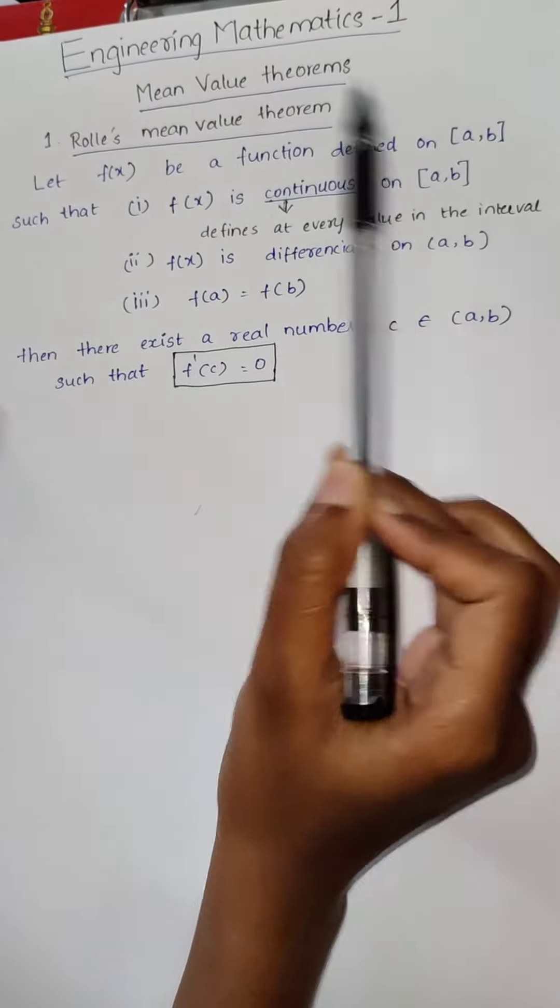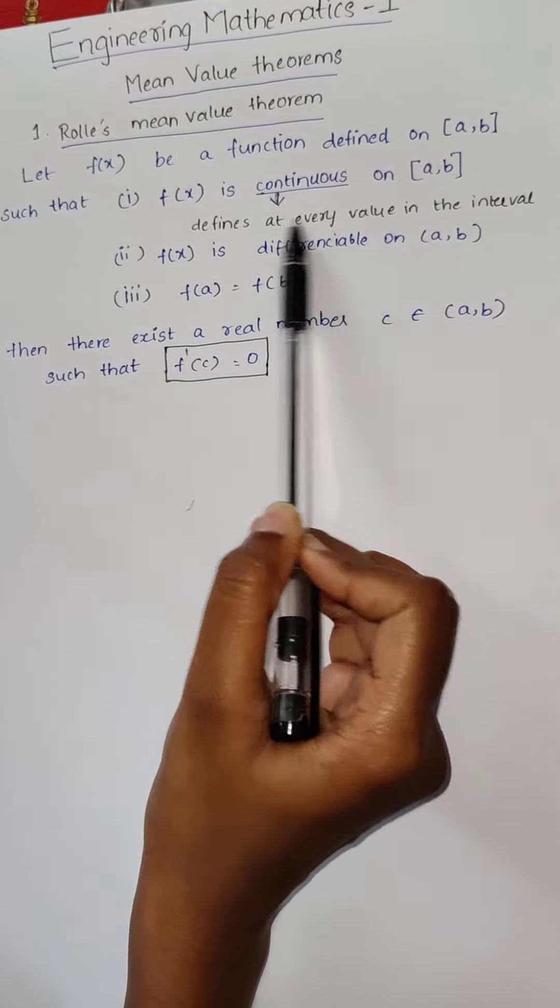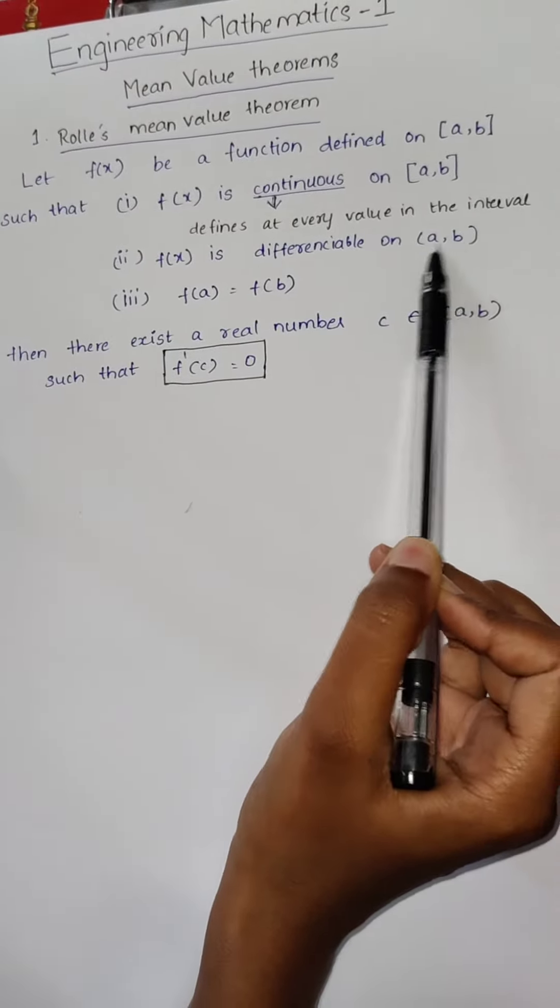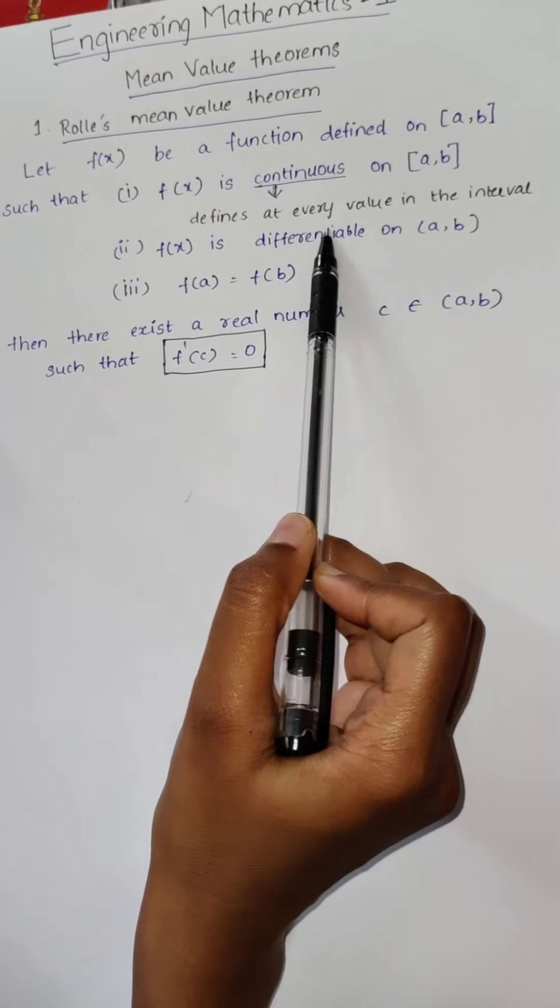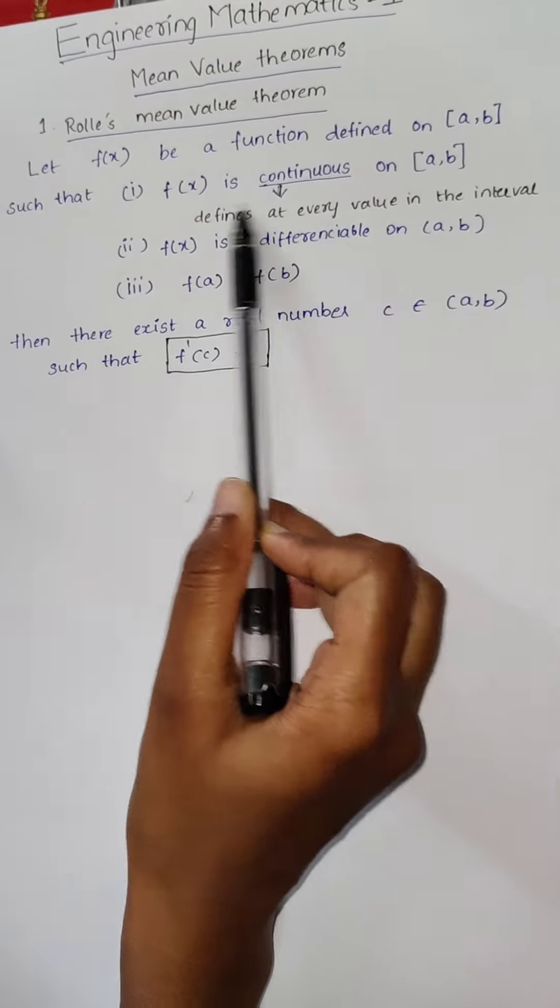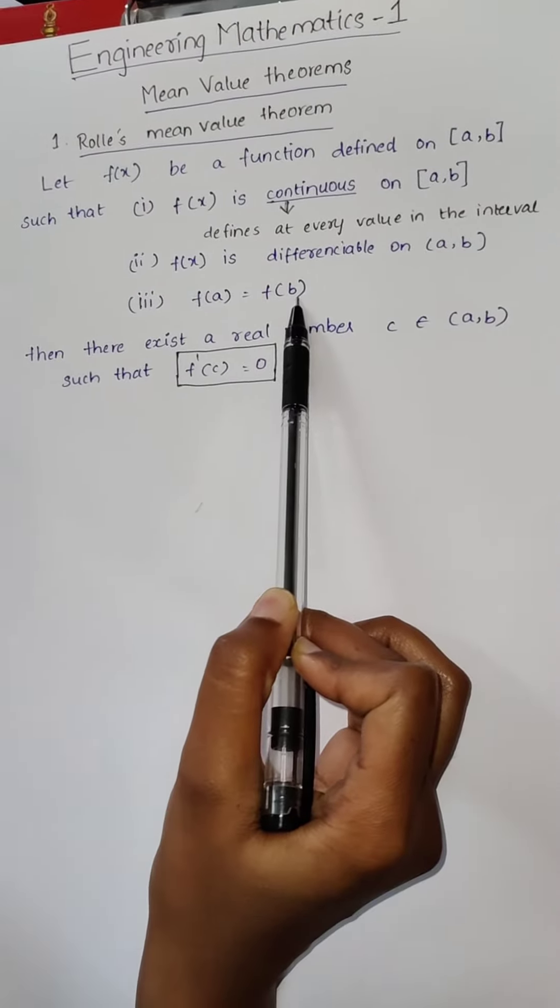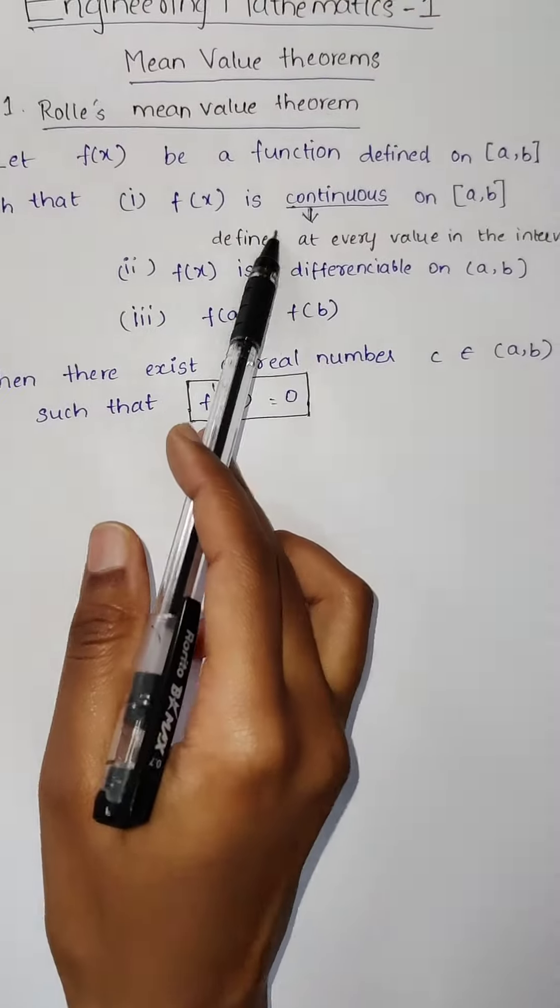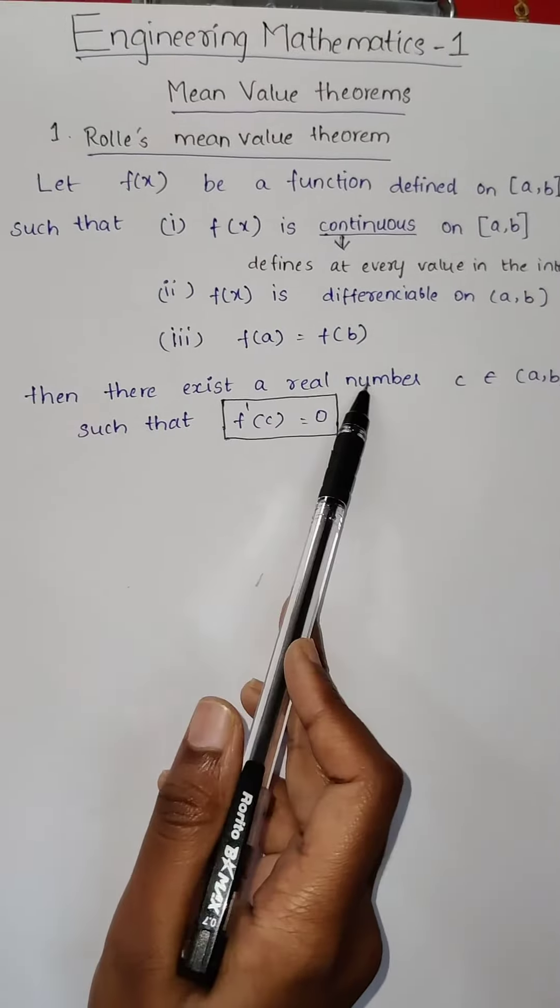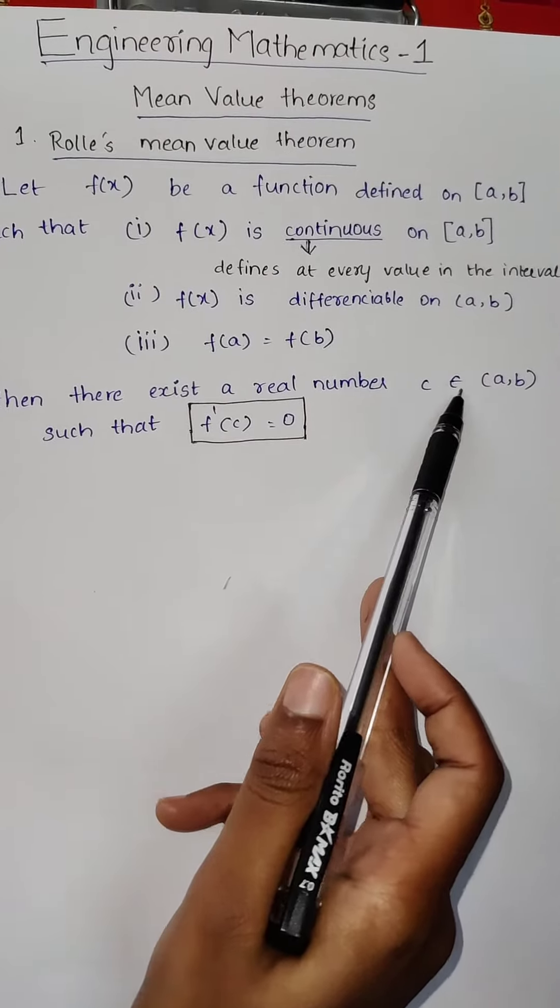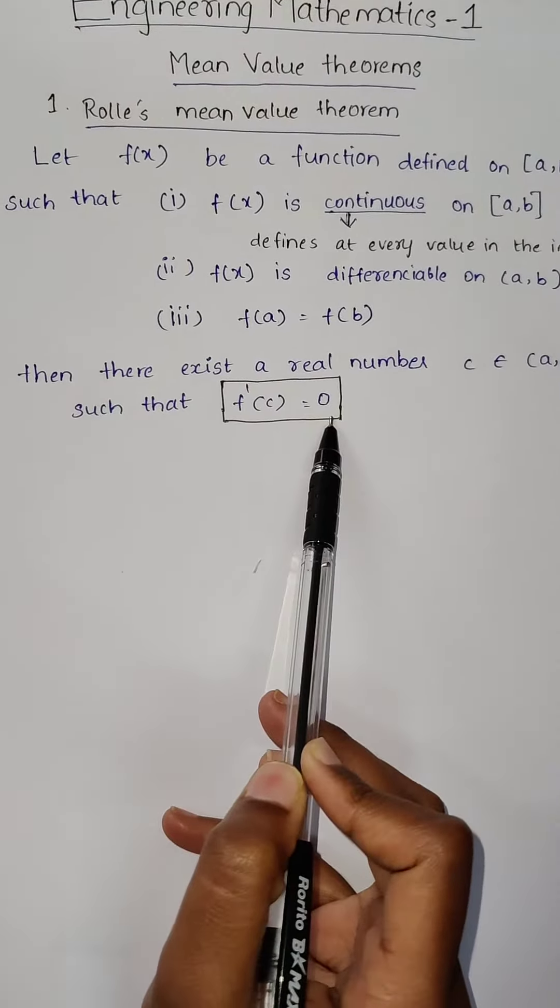If it is also satisfied, we have to check the second condition. That is, it should be differentiable on open interval a comma b. If both conditions are satisfied, then we have to check the third condition. That is, f of a is equal to f of b. If the three conditions are satisfied, then there exists a real number c that belongs to open interval a comma b such that f dash of c is equal to 0.